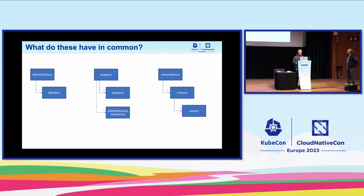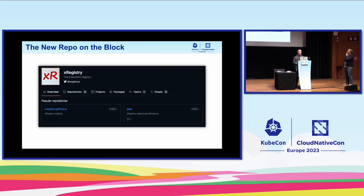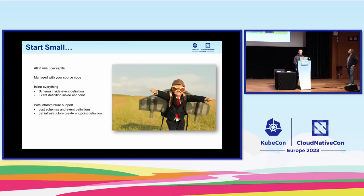There is some commonality across the three registries — it's always this hierarchical setup with groups of metadata stored in metadata resources. We define them in single files, but we also define a standardized API to access them. Since this goes beyond just CloudEvents — you can define arbitrary message formats, store schemas, and extend it to other resources — we call this the xRegistry: the extensible registry. We are currently moving the specification for this part into that repository.